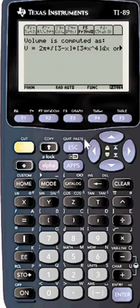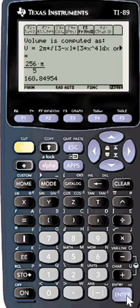The lower function is just 0, so we don't have that term. We press enter and the answer is 256 pi over 5, or as a decimal 160.84954. Thanks for watching.